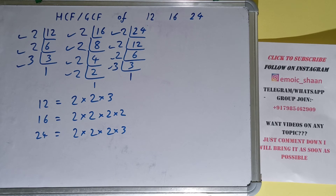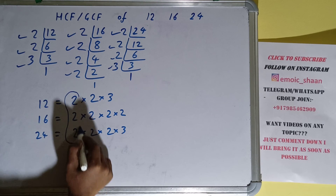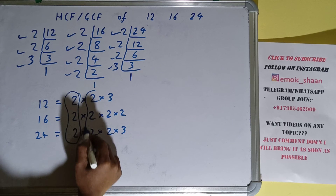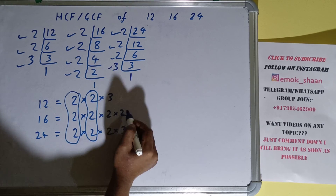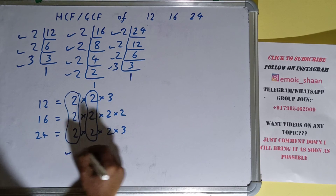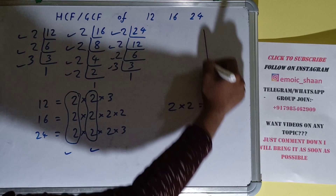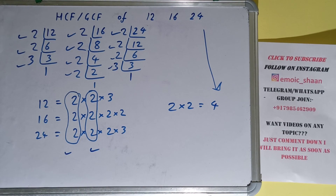Now we need to circle out the common prime factors among all three numbers. We have a 2 in common, and another 2 in common. For 12 we have a 3, but 16 does not have a 3, so nothing else is common among all three. We only have 2 × 2 in common, which gives us 4. So the HCF or GCF of 12, 16, and 24 is 4. If you found the video helpful, please hit the like button, consider subscribing, and thanks for watching!